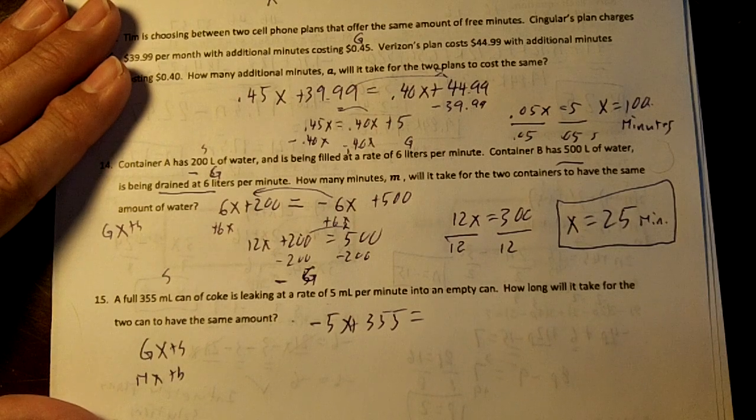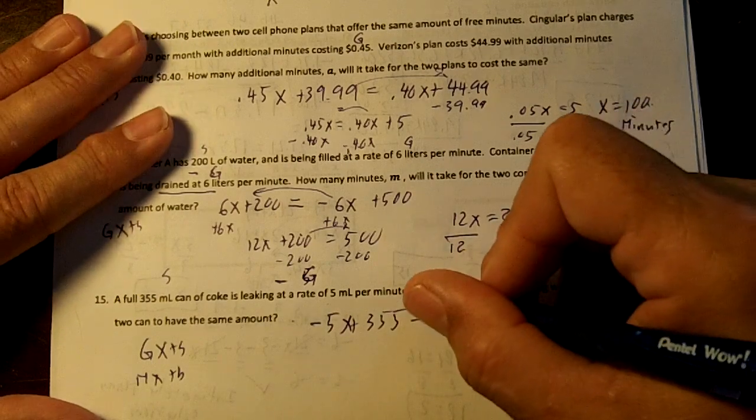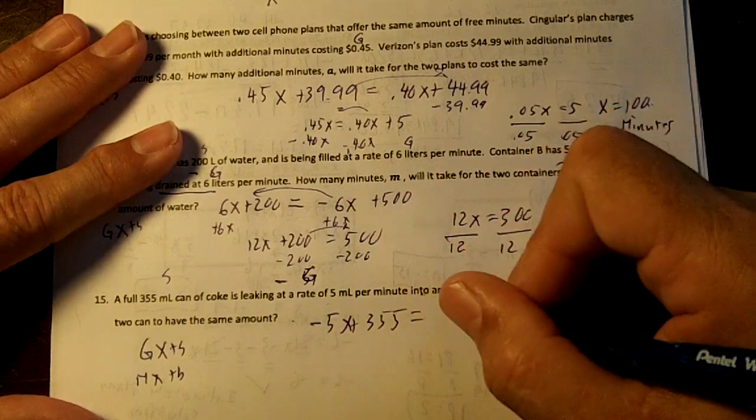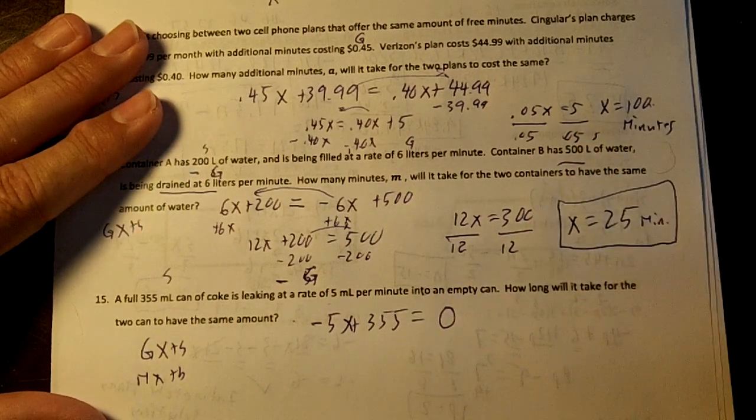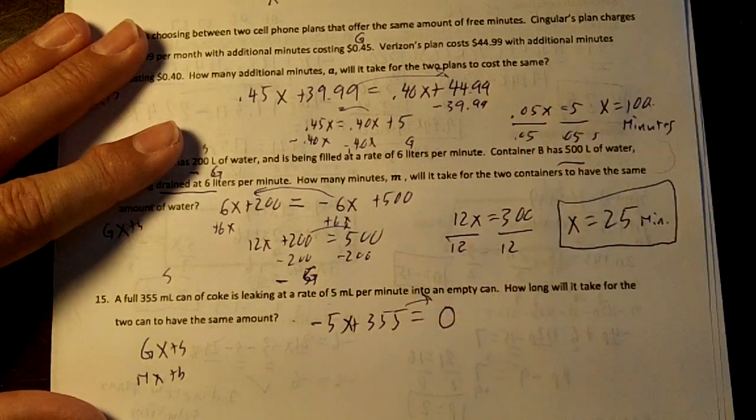There's no other can. Into an empty can. So the empty can is going to be zero. So the empty can will be zero. So we're going to move over the 355.